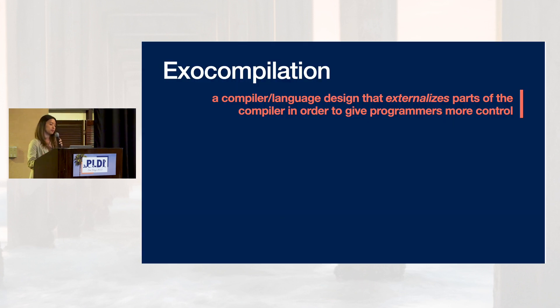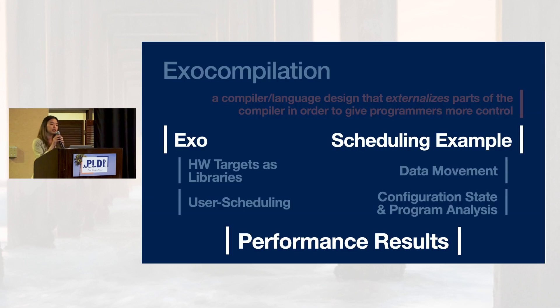So to help performance engineers be more productive, we are proposing an approach called EXO compilation, by which I mean a language and compiler design that externalizes part of the compiler to give programmers more control. In the rest of this talk, we'll discuss the design of our language and EXO compiler, EXO, at a high level. Then we'll get into some details through a few examples, and we'll share some performance results in the end. So let's get started.